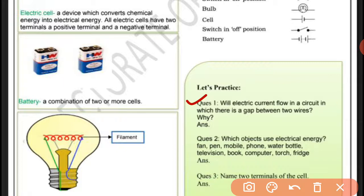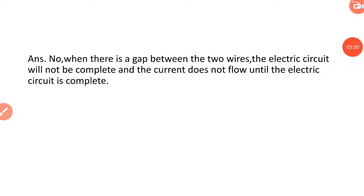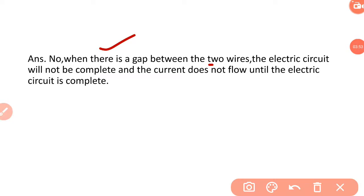First question: Will electric current flow in a circuit in which there is a gap between two wires? No, the electric current will not flow in a circuit in which there is a gap between the two wires. When there is a gap, the electric circuit will not be complete, and current does not flow until the electric circuit is complete.